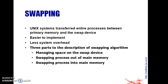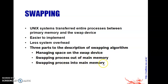Now let us see Swapping. In Unix, the system transfers entire processes between Primary Memory and the Swap Device — complete processes from Primary Memory to the Swap Device. It is easier to implement and has less system overhead. We will cover three things: Managing Space on the Swap Device, Swapping Process out of Memory, and Swapping Process into Memory.